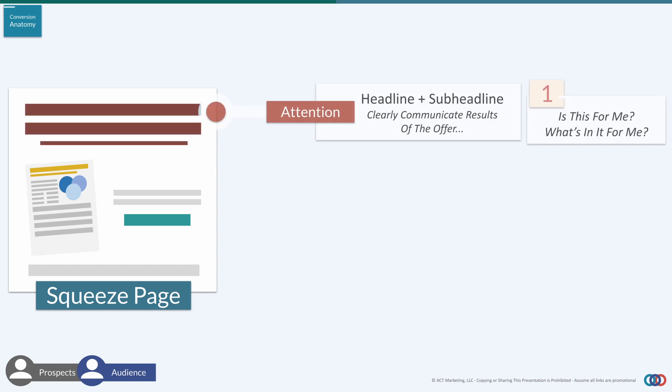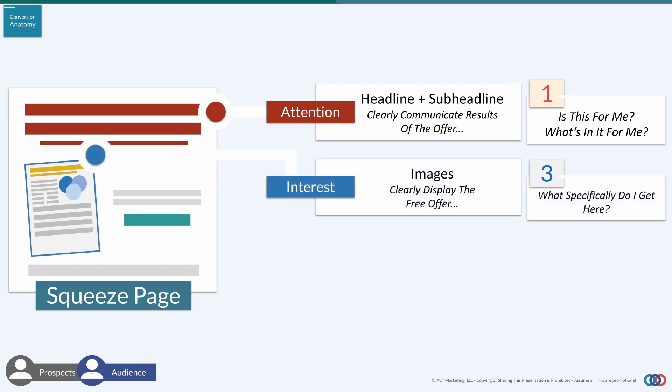Number one: an attention-grabbing headline that clearly communicates what's in it for whoever's just hit your page. Build some interest with a clear picture of what's being offered. A lead magnet is what powers this whole page, so if you don't already have a lead magnet idea — even if you're running affiliate offers — you still should have your own lead magnet.